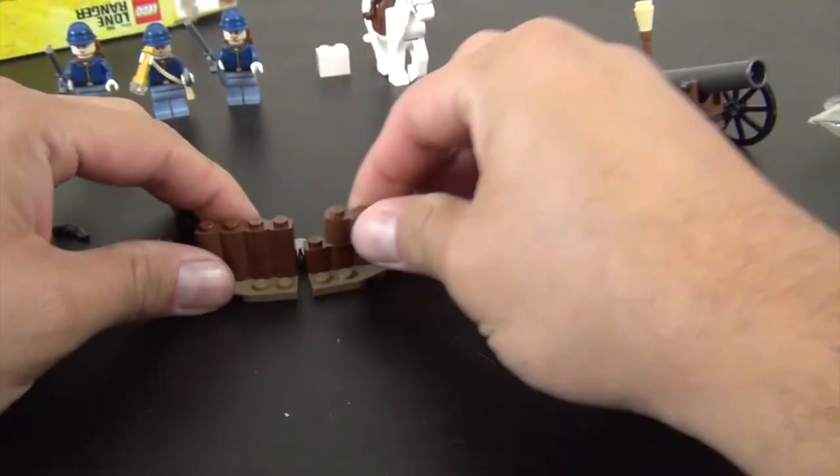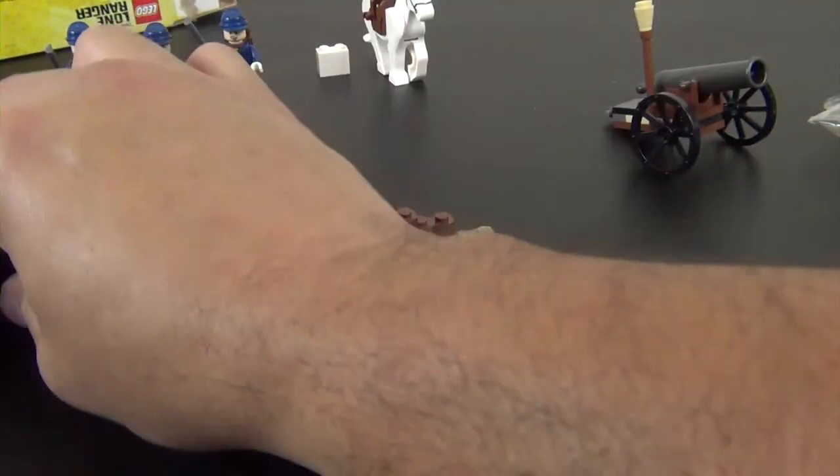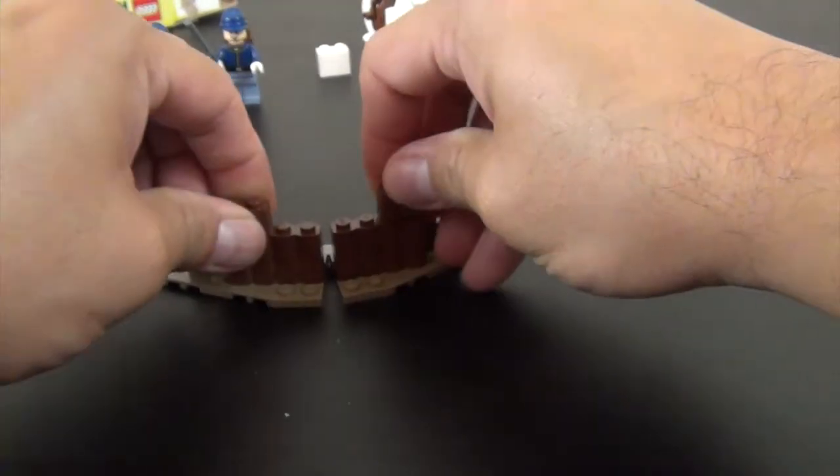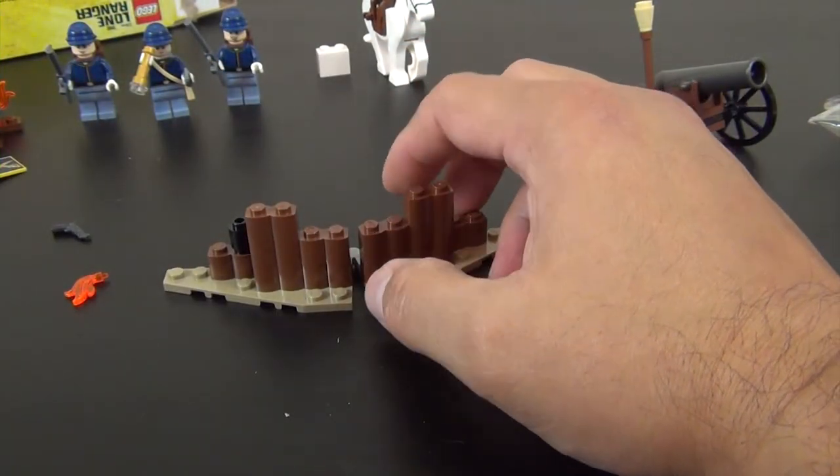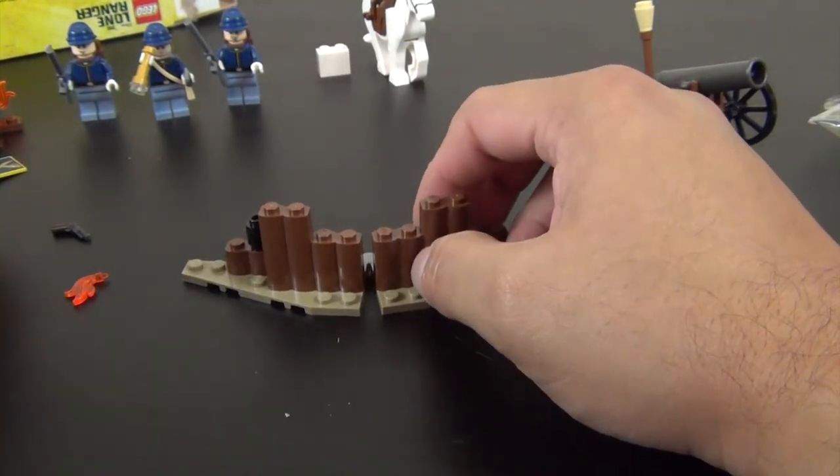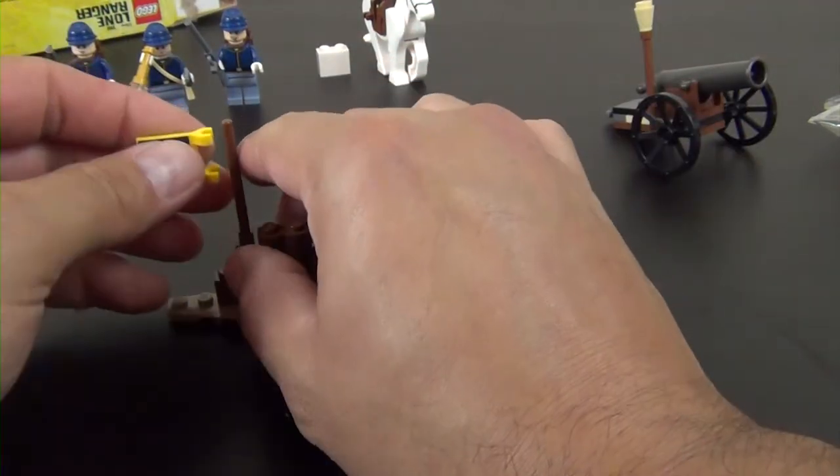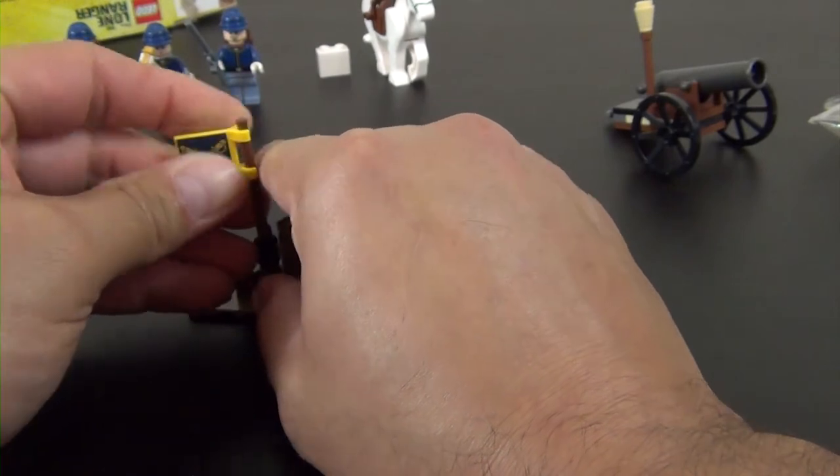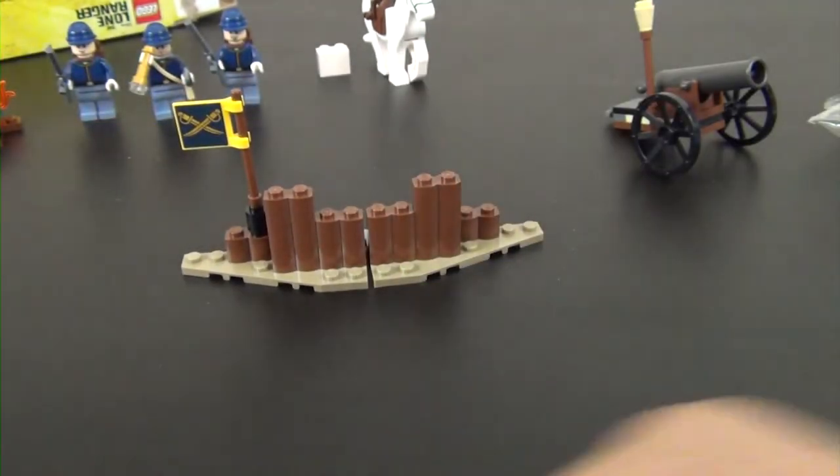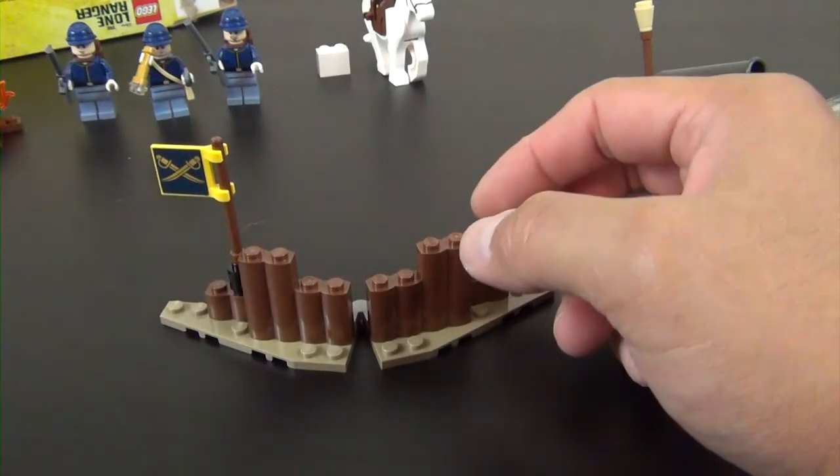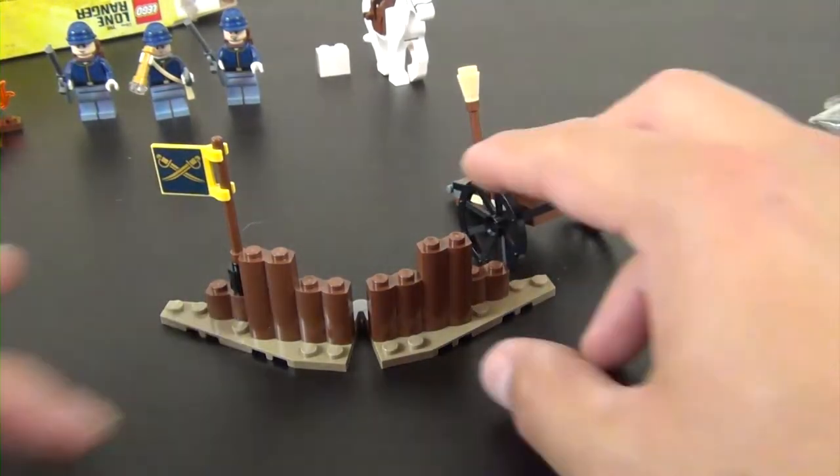These palisade bricks, and two more. This piece goes in there and we have a flag. There it is, that completes the build of the cavalry builder set.